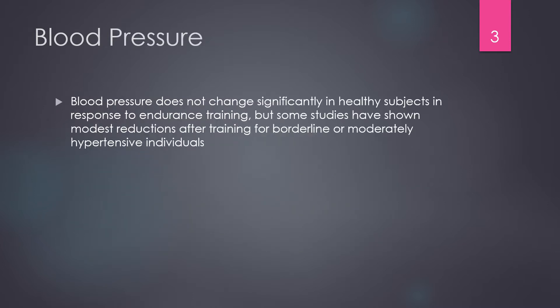When we think about chronic adaptations as they relate to blood pressure, we don't necessarily see a significant change in resting blood pressure in healthy subjects. However, some studies have shown a modest reduction after training for borderline to moderately hypertensive individuals. For people with hypertension, we can reduce blood pressure by six to seven millimeters of mercury. We're not exactly sure why, but for someone with hypertension, we could see a substantial improvement.